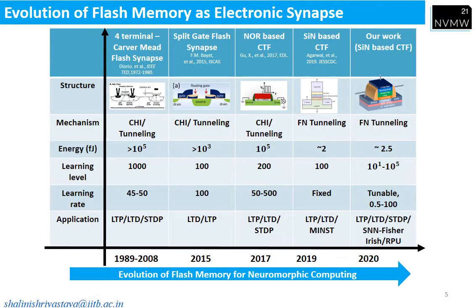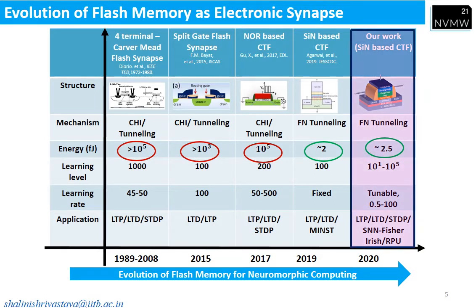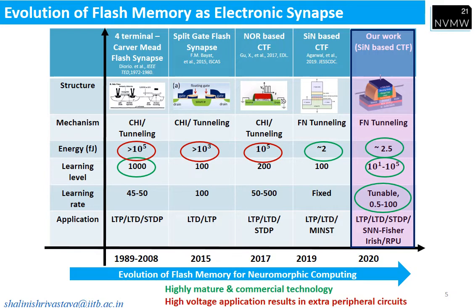In 1989, Professor Carver Mead demonstrated synaptic behavior with a single transistor, which is a flash-based 4-terminal device that works on the CHI mechanism, hence dissipates more energy. On the other hand, FN-based devices dissipate less energy. Here I will discuss silicon nitride-based charge-trap flash with 10^5 learning levels and tunable learning rate. Flash memory is highly manufactured in commercial technology but operates at high voltage, which is one of the disadvantages of this technology.